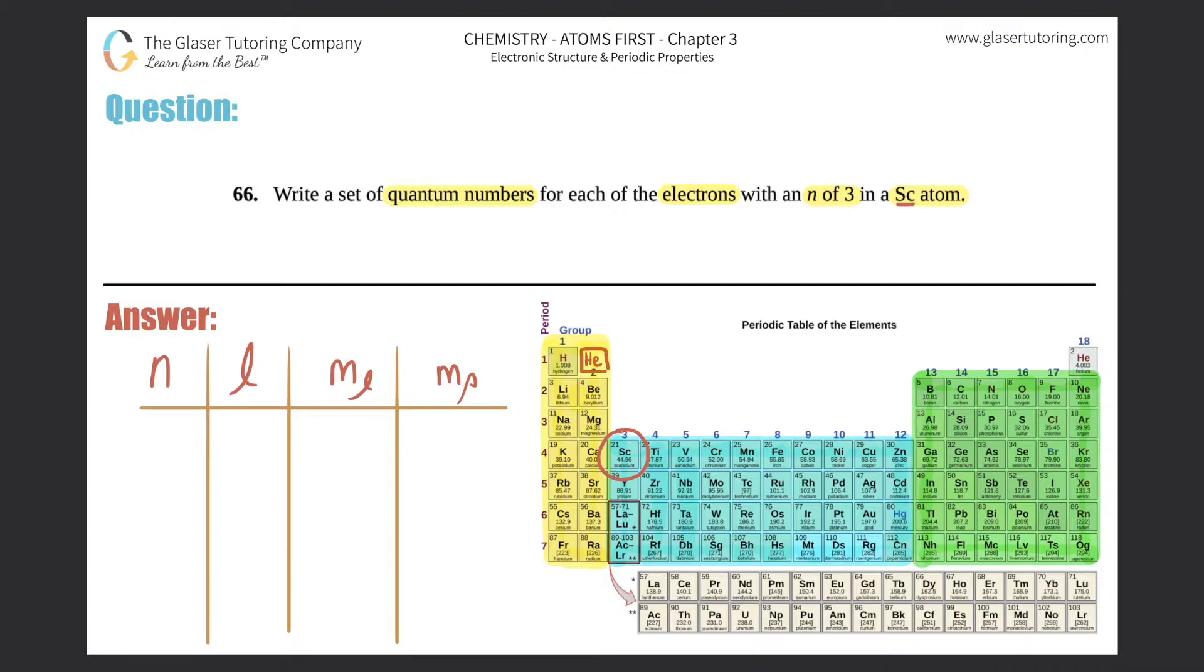So the first thing that I'm going to do is I'm going to write the electron configuration for scandium, because then I can see which electrons are in n equals 3. So I'm going to write that up here: Sc.